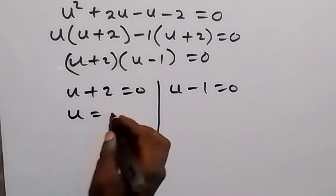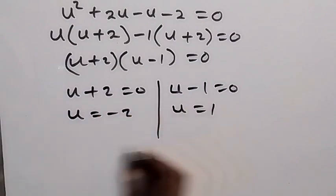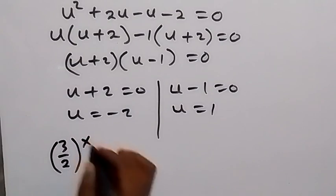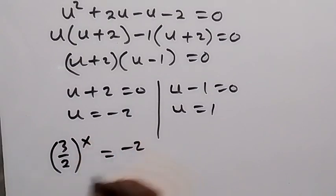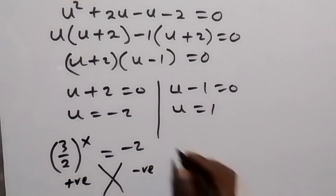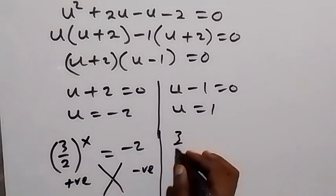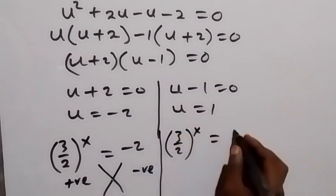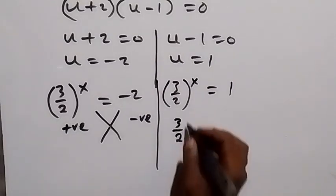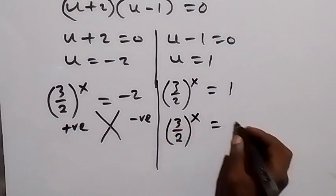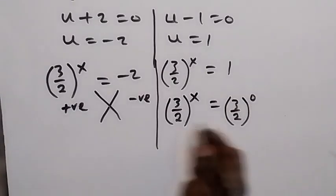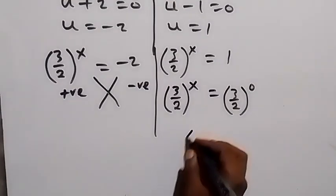From here we have two cases: u plus 2 equals 0, giving u equals minus 2; or u minus 1 equals 0, giving u equals 1. Don't forget u equals 3 over 2 raised to power x. For u equals minus 2: since 3 over 2 raised to power x is always positive, it cannot equal a negative number — no solution. For u equals 1, we have 3 over 2 raised to power x equals 3 over 2 raised to power 0, so the bases are equal and x equals 0.